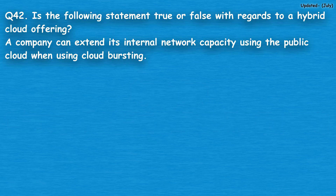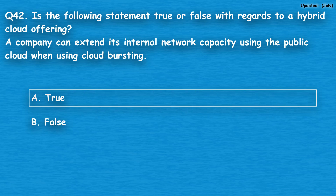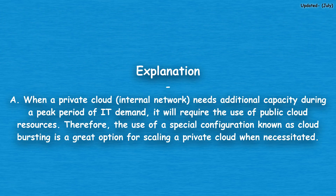Question number 42: True or false — with regards to a hybrid cloud offering, a company can extend its internal network capacity using the public cloud when using cloud bursting. Option A: true, option B: false. The correct answer is option A, true. When a private cloud internal network needs additional capacity during a peak period of IT demand, it will require the use of public cloud resources. Therefore, the use of cloud bursting is a great option for scaling a private cloud when necessitated.